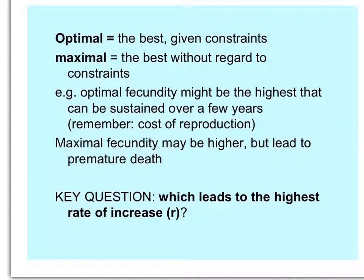You can imagine that an organism putting all its energy into reproduction to be maximally fecund won't have any energy left to survive until the next year. So the key question in life history theory is which of these two strategies leads to the highest rate of increase — little r, the population growth rate.